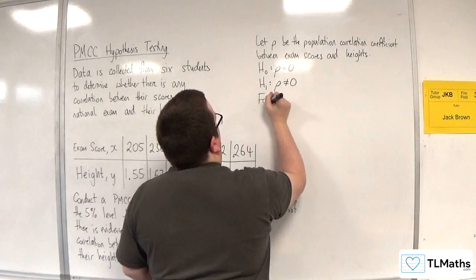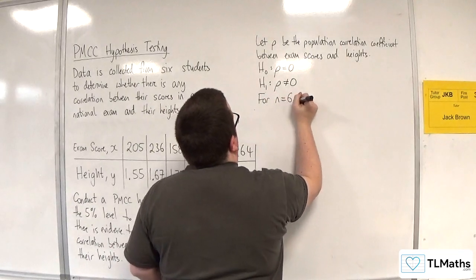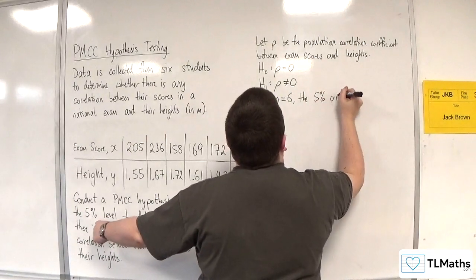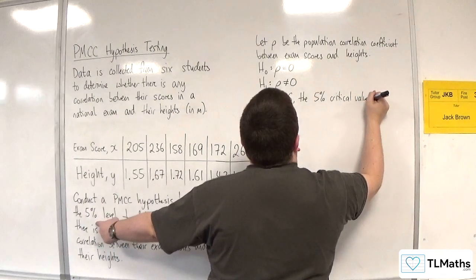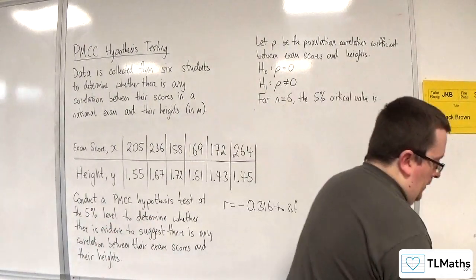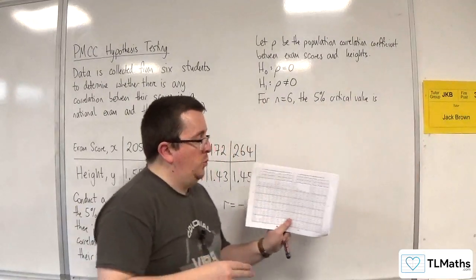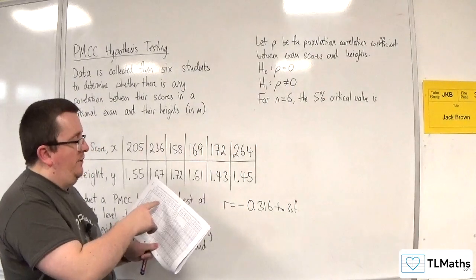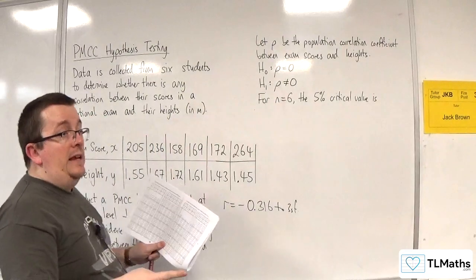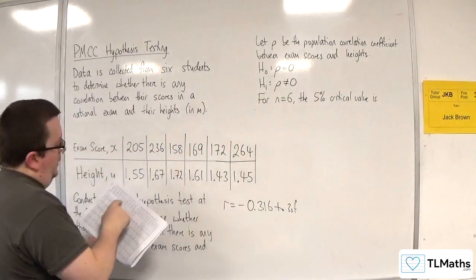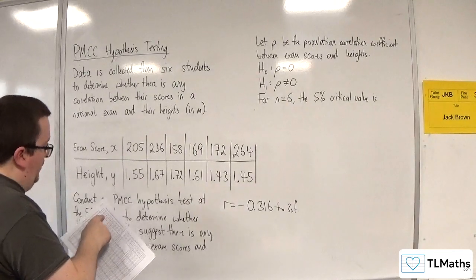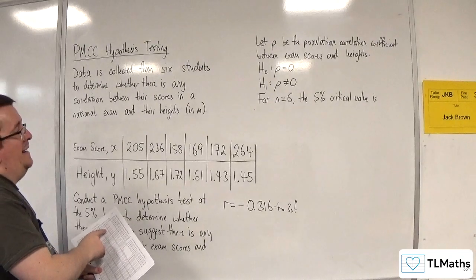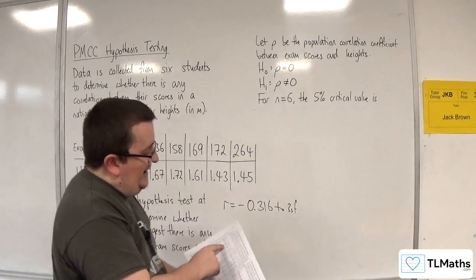Then we need to find the critical value. For n equals six, the five percent critical value is... so we go to our tables. Page 12 in the formula booklet, left-hand side for PMCC. At the top, you've got one-tail test and two-tail test. We're on a two-tail test because rho is not equal to zero. Go along the two-tail test and you want to get to the five percent level, then go down that column until you get to n is equal to six. That's 0.8114.